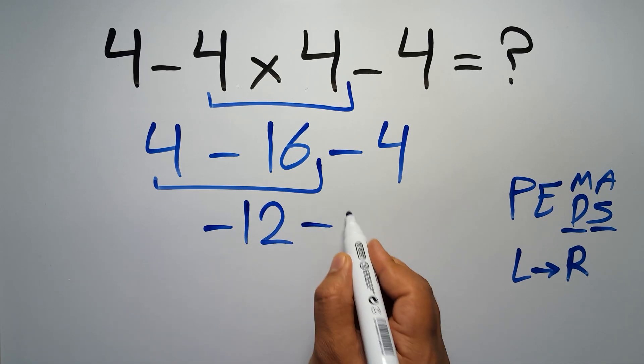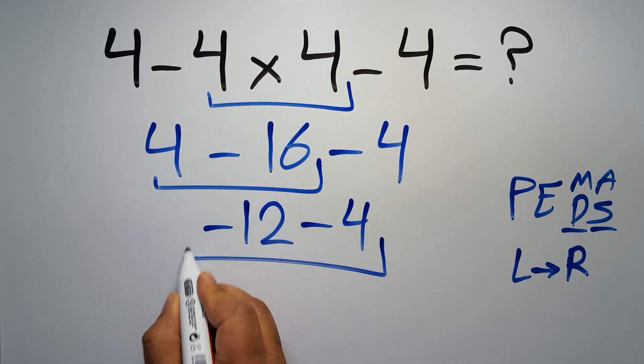So negative 12 minus 4, which gives us negative 16, and this is our final answer to this problem.